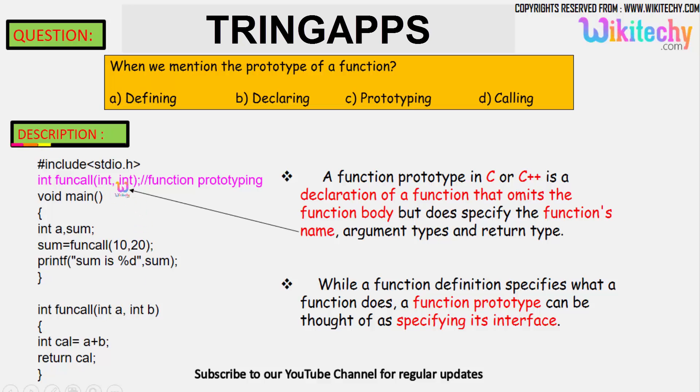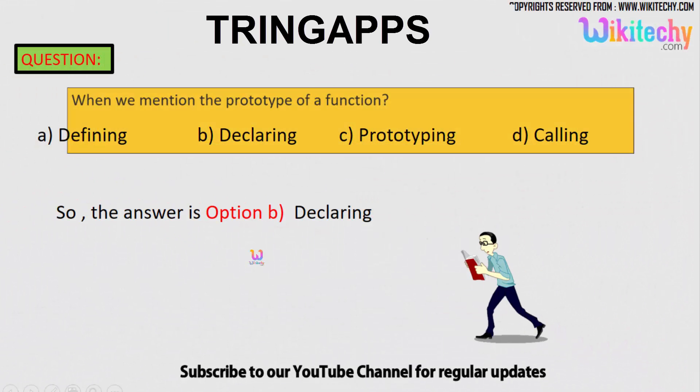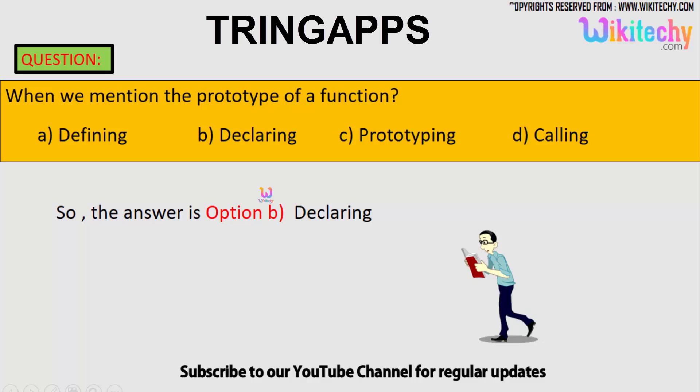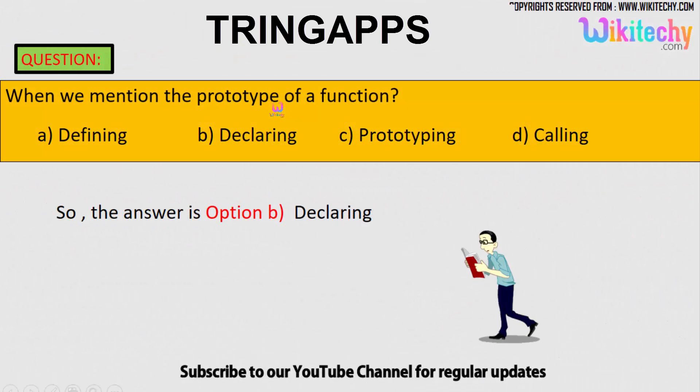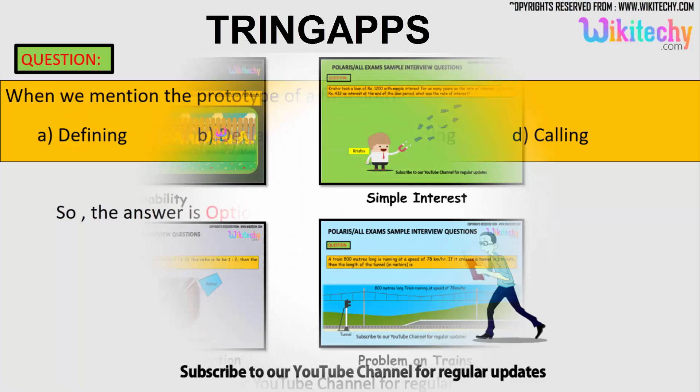The option is declaring. It's not defining because this is the definition. Prototyping, the function prototyping is also called as declaring in C and C++. Calling, we are not calling it. So the exact answer is declaring. The option is B, that's the answer.